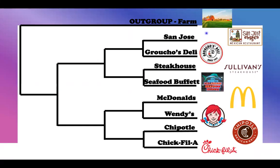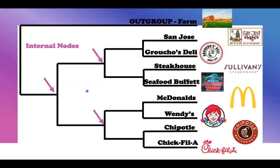We know that our tree is a rooted tree because we know the outgroup of it. Unrooted trees do not have the outgroup, which is the common ancestor of all our OTUs and was the first to evolve. Ours is our farm, which was the first to evolve and leads to this tree being created. We can see in our diagram that these places are internal nodes, showing where OTUs have a common ancestor between them.